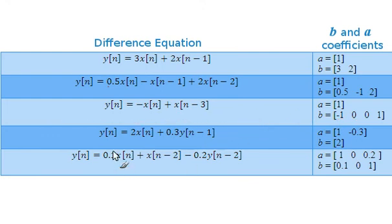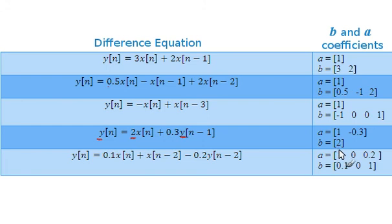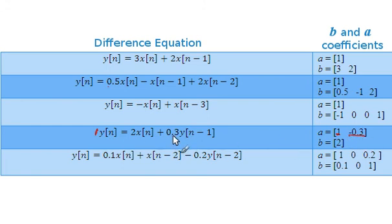In the fourth example, we have two Y terms: Y(N) and Y(N-1). We have a single X term with coefficient 2, which corresponds to the B coefficient value of 2. What can cause confusion is that the A vector shows minus 0.3, even though the difference equation shows plus 0.3.